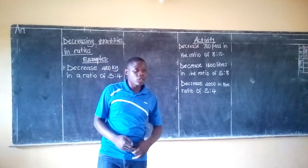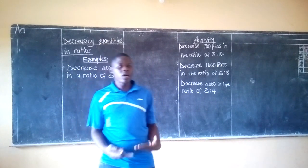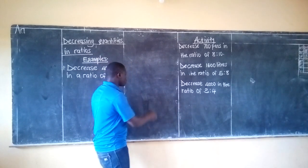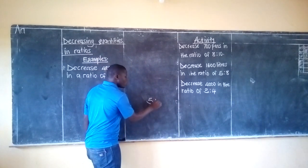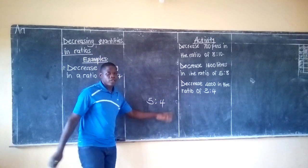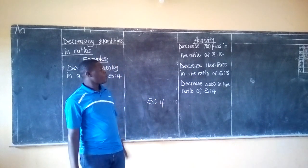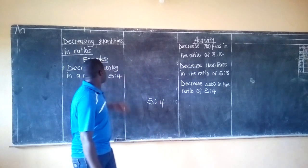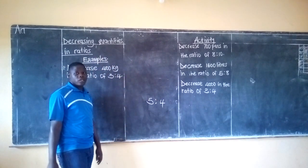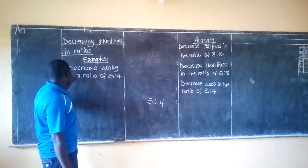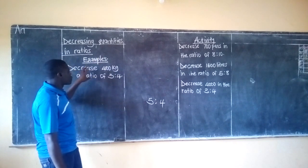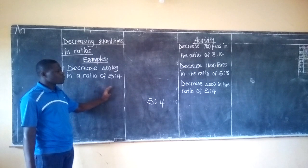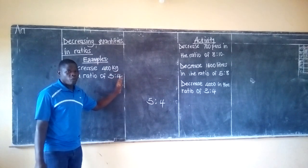Remember last time we looked at increasing quantities in ratios, and I told you with increase the first part of the ratio will be bigger than the second part. We even looked at finding the ratio of increase. So today we are looking at decreasing quantities in ratios, and our first question is: decrease 400 kilograms in a ratio of 3 to 4.